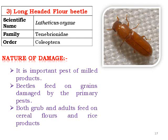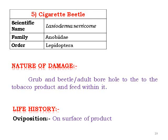The cigarette beetle, Lasioderma serricorne, is a grain and borer pest of tobacco products which are stored at port for shipment. Its life history involves egg-laying on the surface of products and pupation inside them.